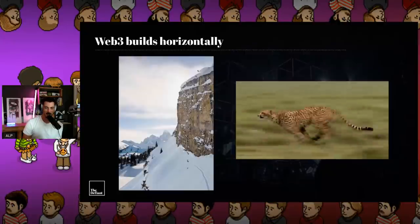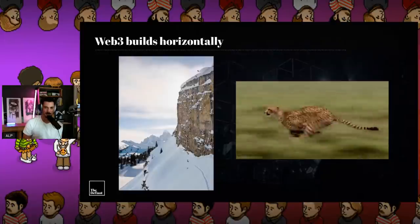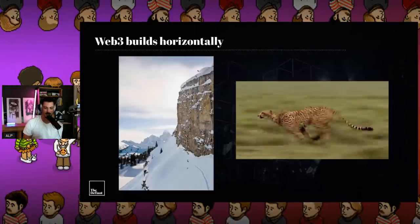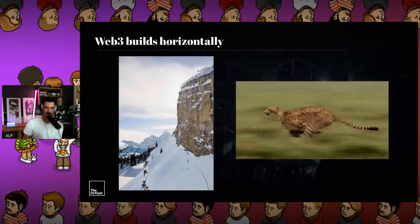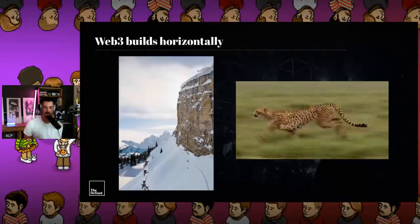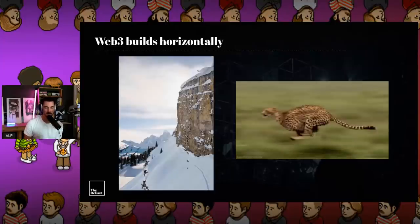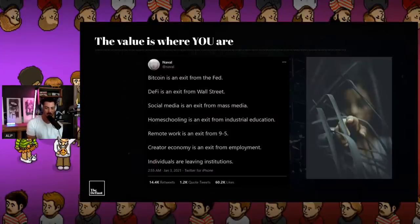I've put the image of a skier on a 120-foot cliff because that's an expression of pure freedom. No one said go and jump off a 120-foot cliff, but that skier spent hours scoping it out and deciding it was safe, knowing the skills he had. For me that is what the metaverse is about — trusting ourselves and our skills to do something because we can, because we are empowered to do so. Naval Ravikant wrote a lovely tweet: 'Bitcoin is an exit from the Fed, DeFi is an exit from Wall Street, social media is an exit from mass media, homeschooling is an exit from industrial education, remote work is an exit from nine to five. Individuals are leaving institutions.'